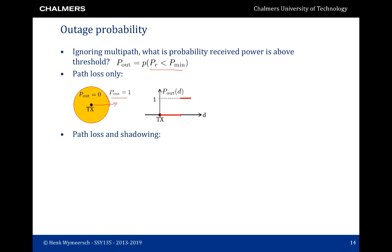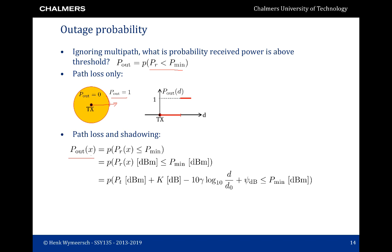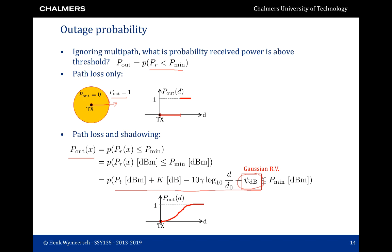With path loss and shadowing, things become more subtle. The outage probability at a certain location x at distance d from the transmitter is the probability that the received power is less than the threshold — equivalently, the probability that the received power in dBm is less than the threshold in dBm. The received power can be written as a function of transmit power, distance, path loss exponent, and shadowing. The only random element is the shadowing, which is a zero-mean normal distribution with a certain variance. We can solve this using the Q function. The outage probability as a function of distance starts very small close to the transmitter and increases to 1 further away. This means there can be outage close to the transmitter and non-outage locations far away if the shadowing worked in our favor.